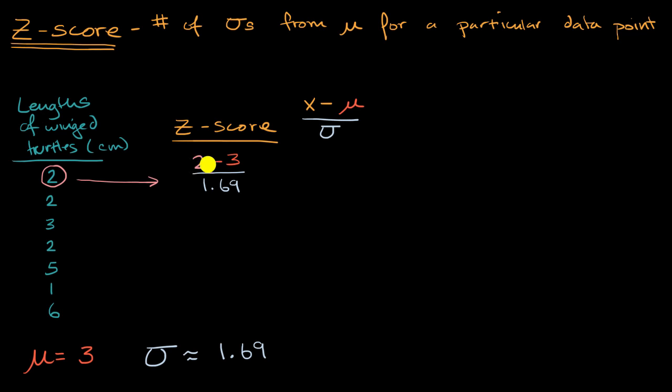And if you got a calculator out, this is going to be negative one divided by one point six nine. And if you use a calculator, you would get, this is going to be approximately negative zero point five nine. And the z-score for this data point is going to be the same. That is also going to be negative zero point five nine.